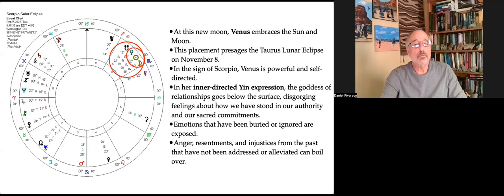At this new moon, Venus embraces the sun and moon. This placement presages the Taurus lunar eclipse on November 8th, Venus being also the ruler of Taurus. In the sign of Scorpio, Venus is powerful and self-directed. It is her inner directed yin expression in Taurus that is the goddess of relationships going below the surface, disgorging feelings about how we have stood in our authority and our sacred commitments.